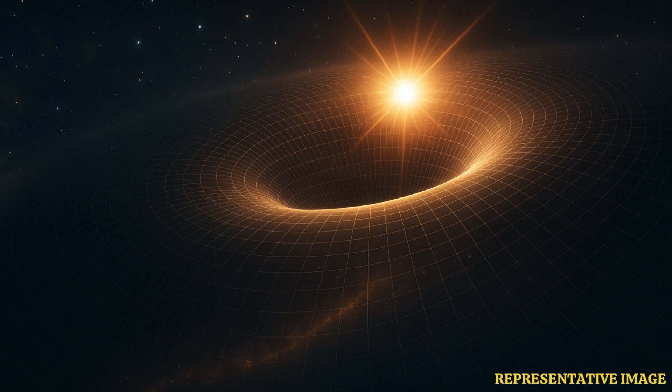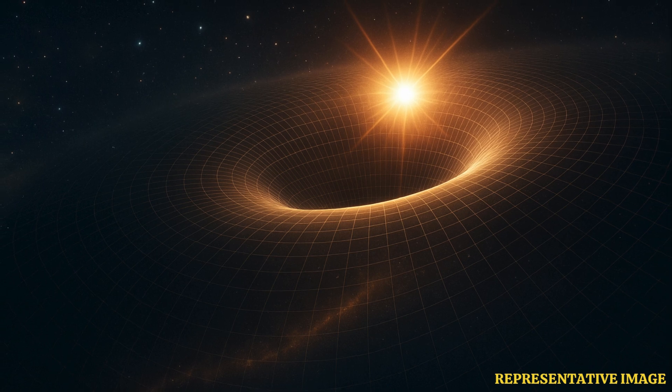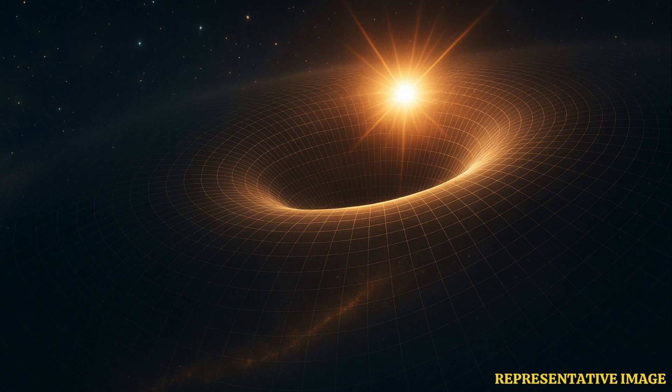In Einstein's general theory of relativity, gravity is described as a geometric phenomenon. Just as a newly made bed curves under a person's weight, heavy objects can bend the geometric shape of the universe. But according to Einstein's theory, even the empty space, the vacuum state of the universe, has a rich geometric structure.